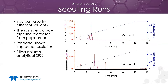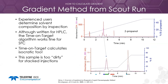Here is an example using different solvents — piperine was extracted from peppercorns. A silica analytical column was run with methanol and 2-propanol, and the 2-propanol showed much better resolution. This sample has too many early and late-eluting peaks for stacked injections, but it shows how focused gradients can be created. Experienced users can often determine an isocratic or focused gradient by inspection. The time-on-target algorithm works very well for SFC or HPLC and can be used to determine an isocratic method. A preparative gradient was quickly determined from the analytical scouting run, which worked very well.